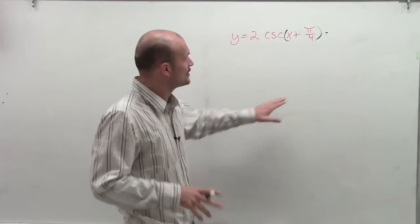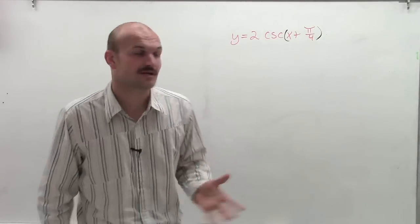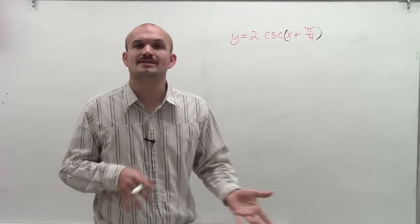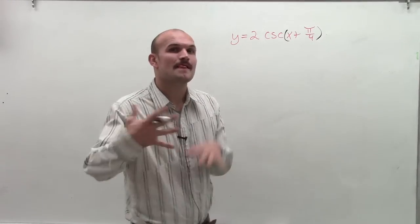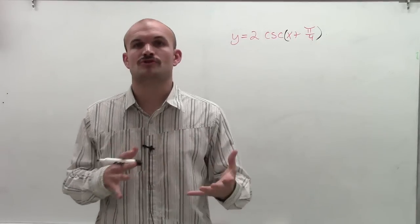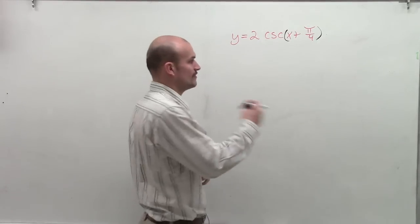So the first thing we need to understand about the cosecant function is that it's the reciprocal of the sine function. So when dealing with graphing the cosecant function, we need to graph the sine function first with our given transformations. Then I'm going to show you some quick little tricks to figure out how to get to the cosecant graph from the sine graph.